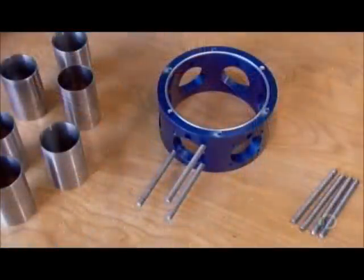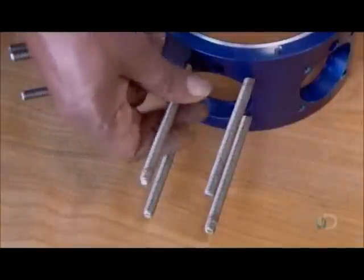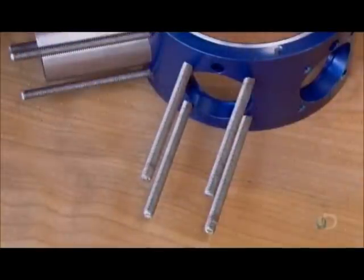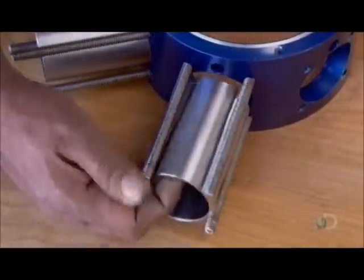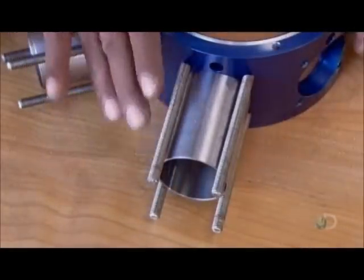The circular engine block is made of aluminum. Technicians install studs to hold six stainless steel cylinders. Due to the constant exposure to steam, all engine parts are made of rust-proof materials.